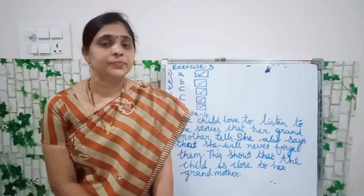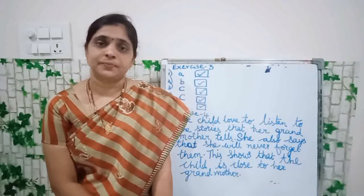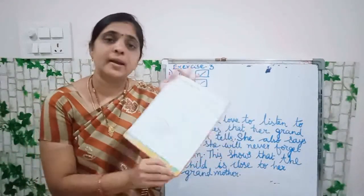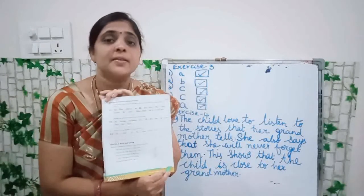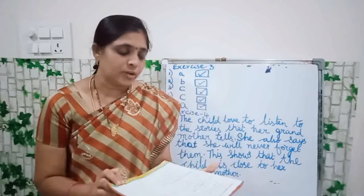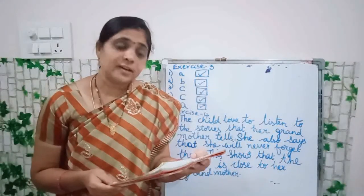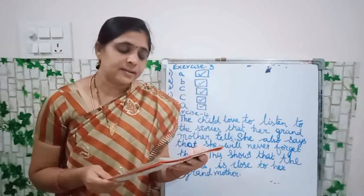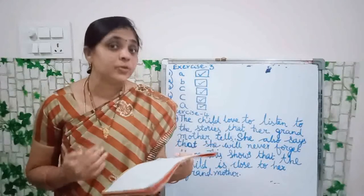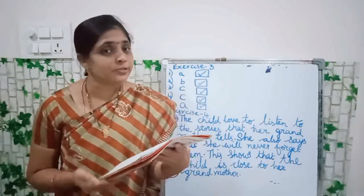Now what you will do? Take out your textbook and now we are going to do Exercise 3. All of you take out your textbook, page number 9, lesson number 8. So here Exercise 3 — Read and Answer. Read the sentences and tick the correct option. You have to read the sentences and tick the correct answer.